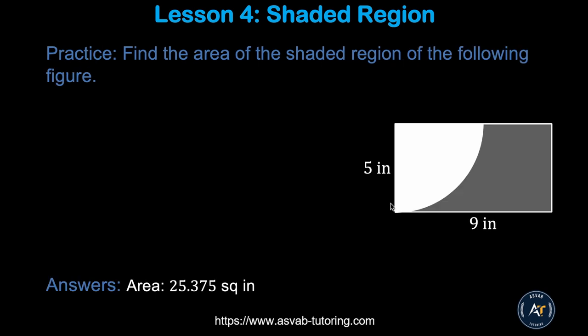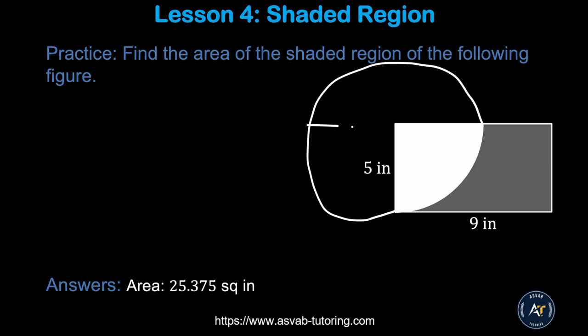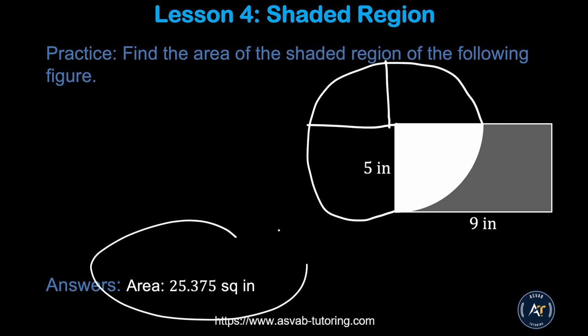This is another practice problem. In this figure there is one quarter of a circle. First find the area of the circle whose radius is 5, then divide by 4 because this is one quarter section. Then find the area of the rectangle and subtract to get the shaded area.